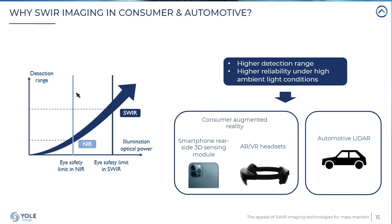There are additional interests for SWIR: safety regulations are more relaxed in the SWIR range than in near infrared, meaning higher optical power can be used in illuminators for 3D sensing modules. This allows increased detection range and more reliable operation under high ambient light — especially useful for long-range consumer augmented reality, 3D sensing in AR/VR headsets, and also for automotive LiDAR.